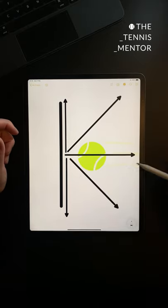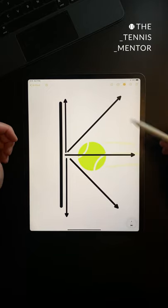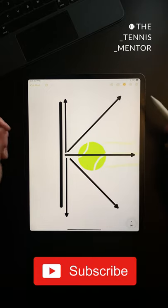The bigger the difference between your racket angle and your racket path the more spin you will impart onto the tennis ball. The closer your swing path and racket angle are the more power you will get.